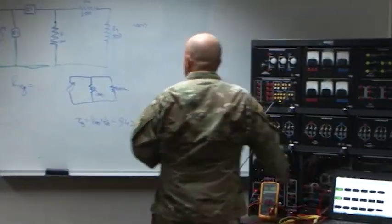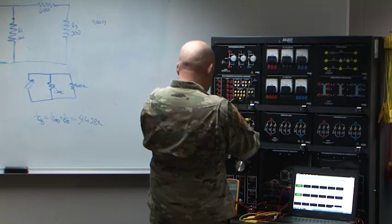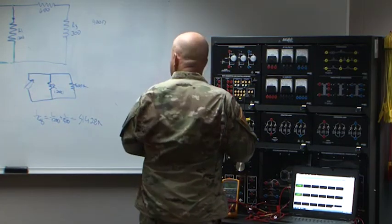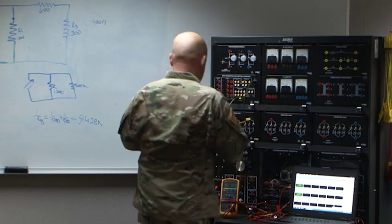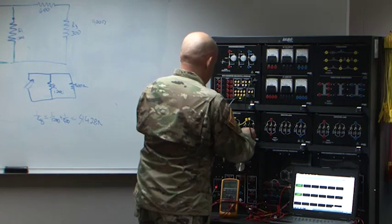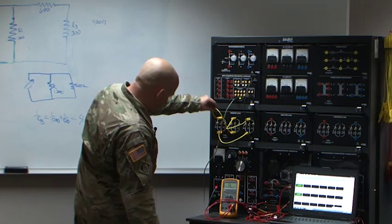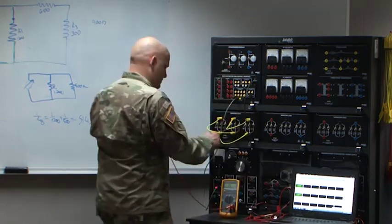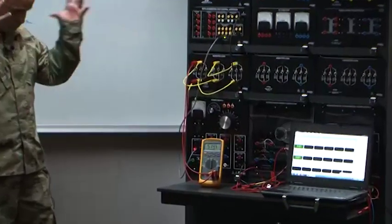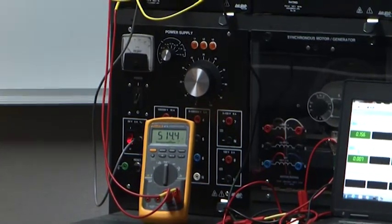Building the circuit on the lab bolt: the 600 and 300 in series, with the 1200 in parallel across them. Measuring the resistance — 514.4 ohms. That confirms our calculation of 514.28 ohms. So we've proven series equivalent resistance, parallel equivalent resistance, and series-parallel equivalent resistance all experimentally.